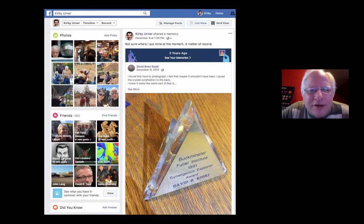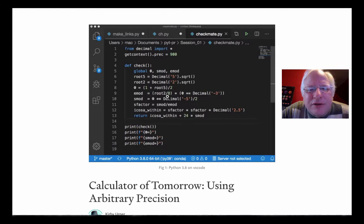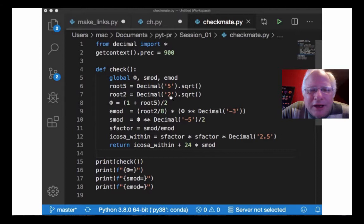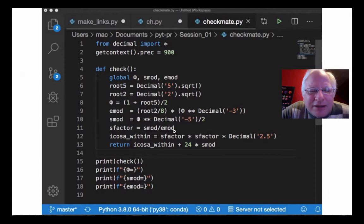Like, for example, the E module is just second root of two over eight. You can say square root if you want. But, you know, triangles work. And times phi to the negative three power. So that's one over phi to the third. And I'm using the Russian Cyrillic phi or F. It's the letter F or F whatever. Fill the gas tank. And I'm taking the E and the S and creating what's called the S factor.